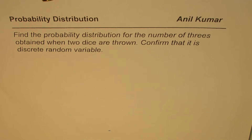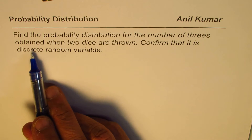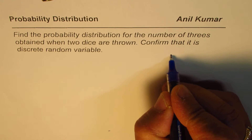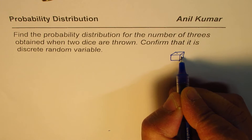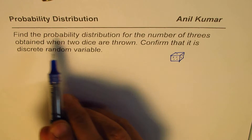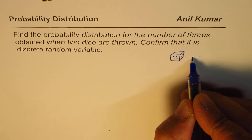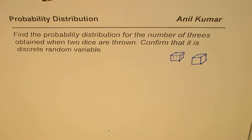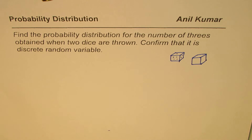I'm Anil Kumar and we are exploring probability distributions. The question here is: find the probability distribution for the number of threes obtained when two dice are thrown, and confirm that it is a discrete random variable. Let's consider two fair dice being thrown. Each die has six faces, giving us a total of 36 possible combinations.